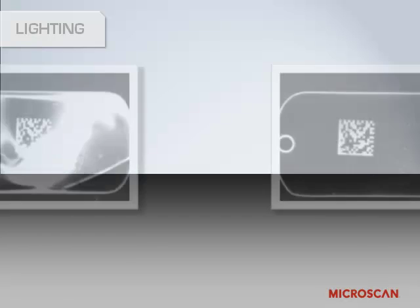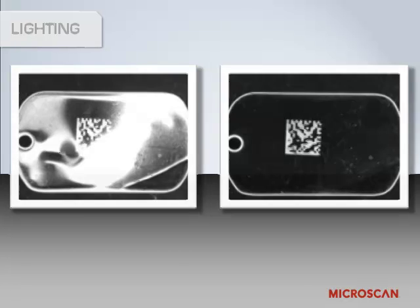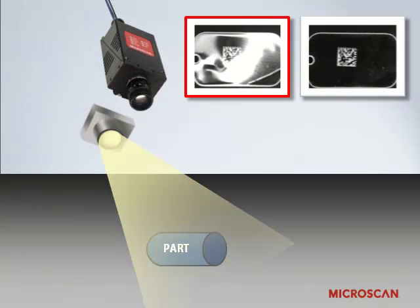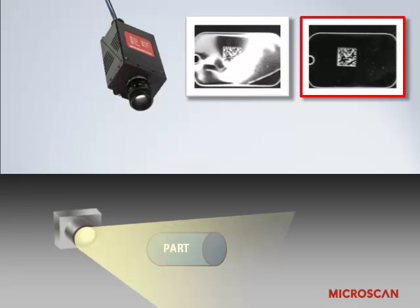Here is another instance where the position of the light impacts the image significantly. In these images, the same part is lit with the same light. On the left, the light is placed near the camera lens. In the image on the right, the light is positioned lower and closer to the part. This clearly makes a big difference in the way the data matrix code shows up, as well as the outline of the part.